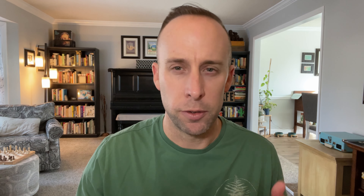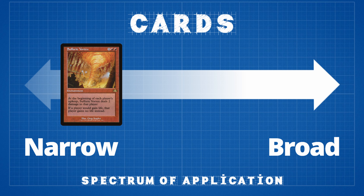Now let's look at a different card: Sulfuric Vortex. Sulfuric Vortex is an enchantment for one red red that says at the beginning of each player's upkeep, Sulfuric Vortex deals two damage to that player. If a player would gain life, that player gains no life instead. Unlike Ponder, Sulfuric Vortex fits into fewer archetypes — first of all, it's a double red mana pip, meaning you want to be really into red to play this card and not just splash it. It mostly fits into aggressive strategies looking to end the game quickly, such as mono red or a red-based aggro deck. Sulfuric Vortex would be known as a card with more narrow applicability.